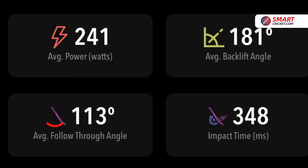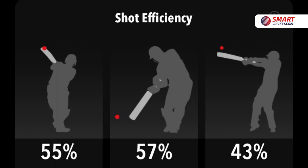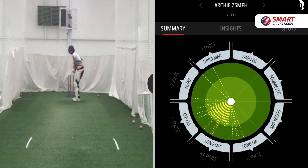Our global average for shot efficiency is 40, so we can see in Archie's shots here he had an overall of 55 percent. Archie averages an impressive 57 percent on his vertical shots, and he has already set some goals to try and raise that 43 percent shot efficiency for his horizontal shots.